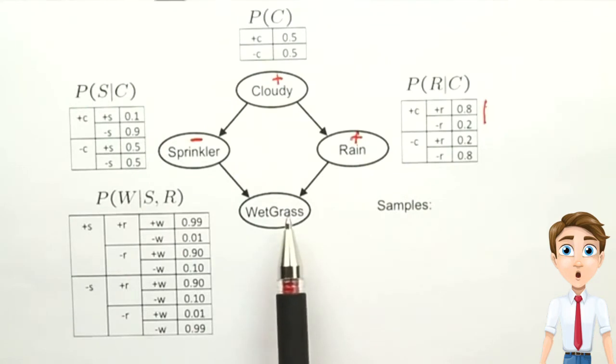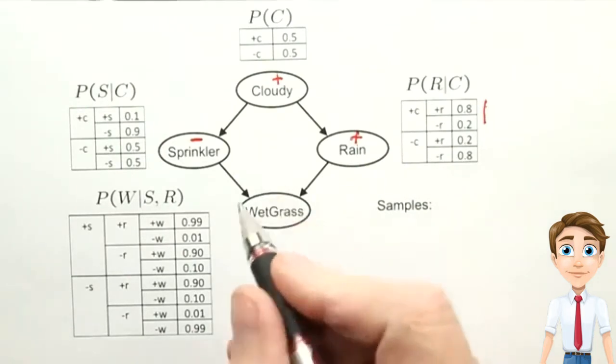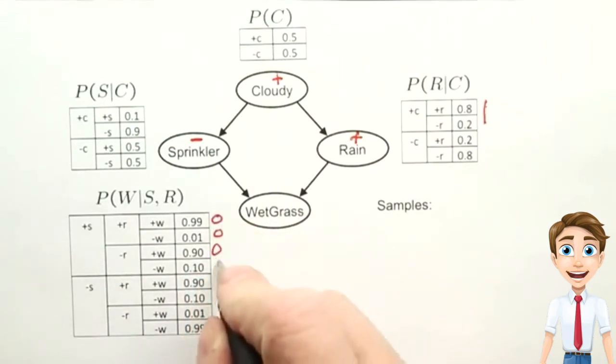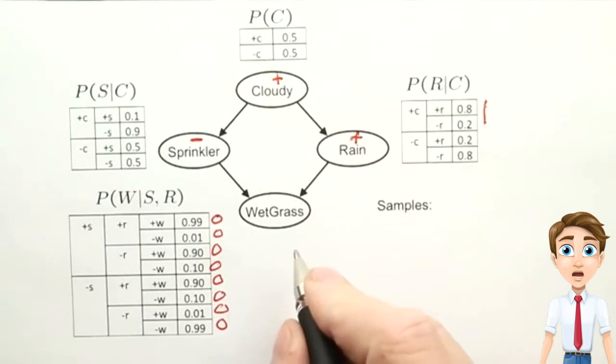And now we're ready to sample the final variable. And what I want you to do is tell me which of the rows of this table should we be considering, and tell me what's more likely. Is it more likely that we have a positive W or a negative W?